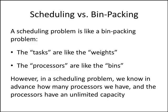In a bin packing problem, you don't know how many bins you're going to need at the beginning, and the bins have a limited capacity. Once a bin is full or doesn't have any room left, then you might open up a new bin. In a scheduling problem, we know in advance exactly how many processors we're going to have, and the processors have an unlimited capacity.